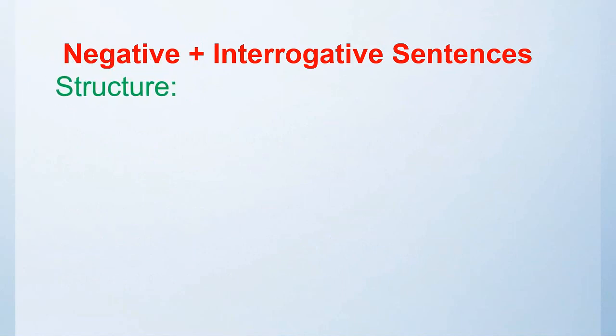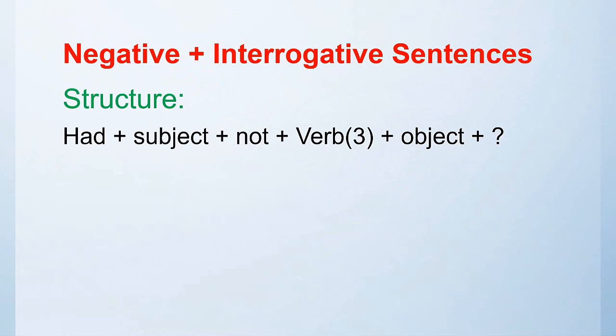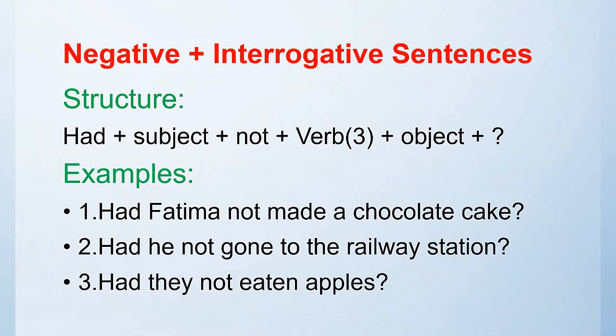Now let's look at the negative and interrogative sentences. The structure is: had plus subject plus not plus verb third form plus object plus question mark. Examples: Had Fatima not made a chocolate cake? Had he not gone to the railway station? Had they not eaten apples?